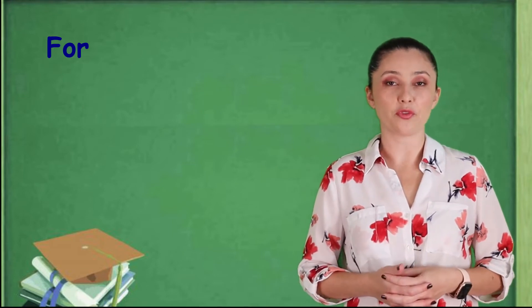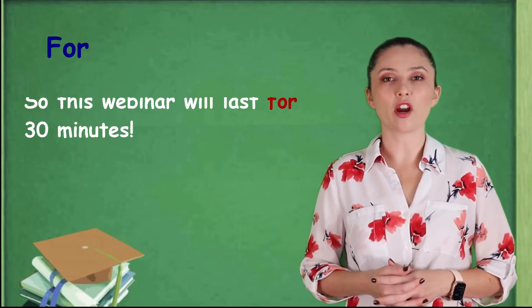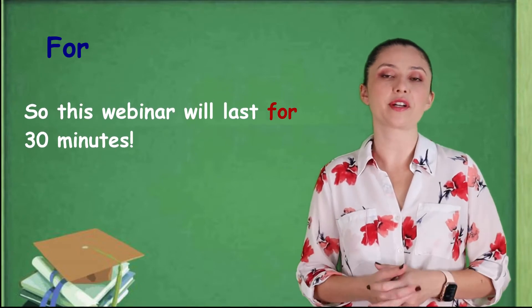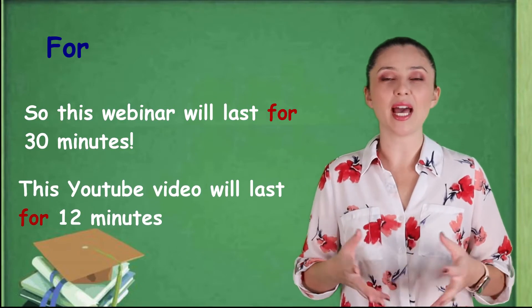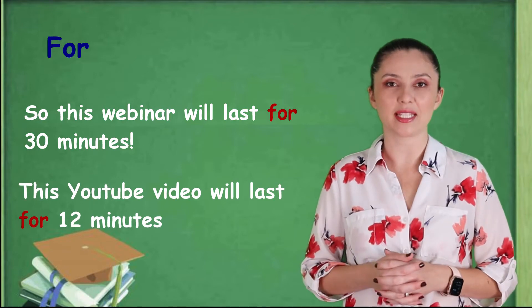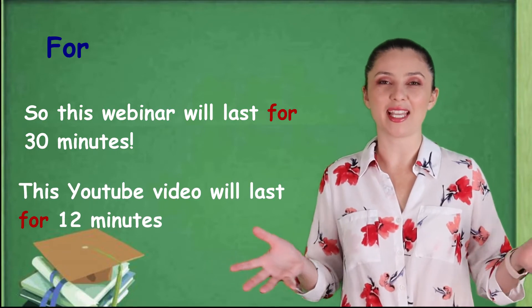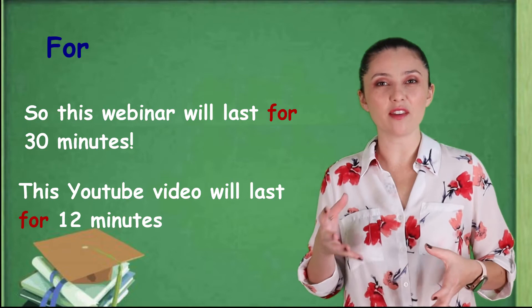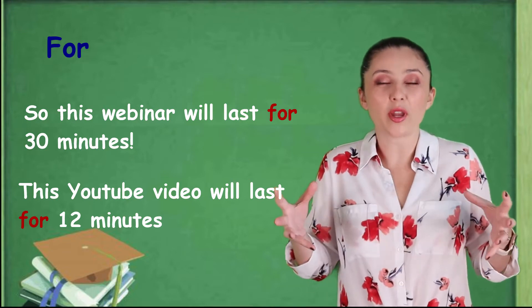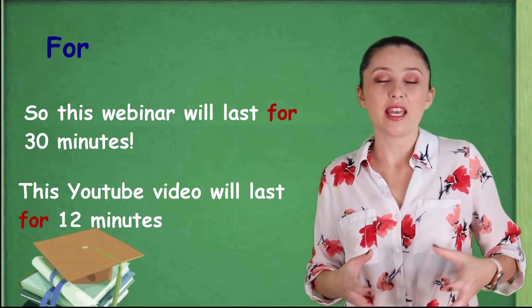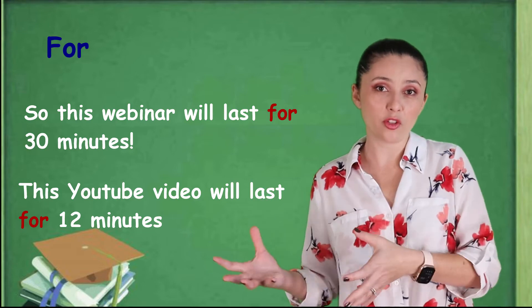When we are talking about duration, we can also use the preposition for. So, this webinar will last for 30 minutes. This YouTube video will last for 12 minutes. I'm not sure. I'm guessing. So, here I'm giving you the duration of this event. In this case, the webinar and the YouTube video.